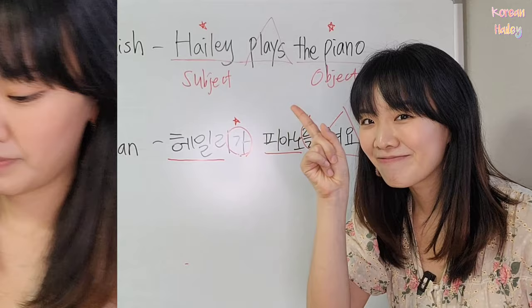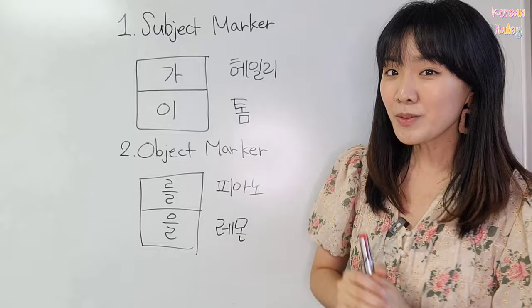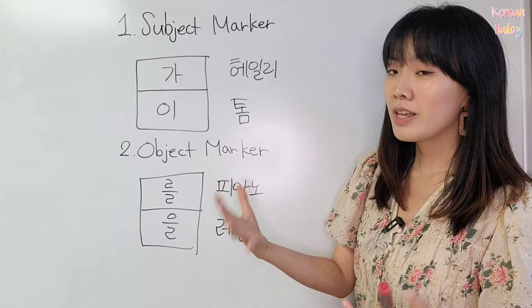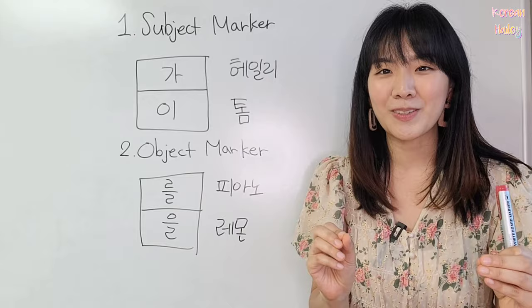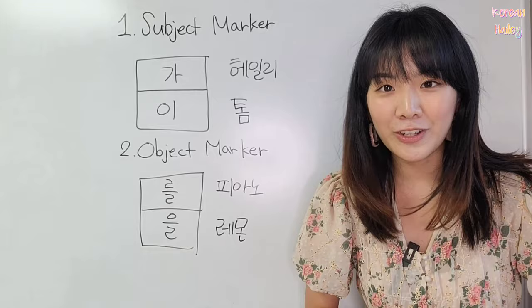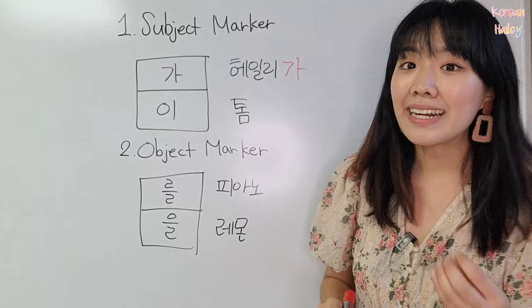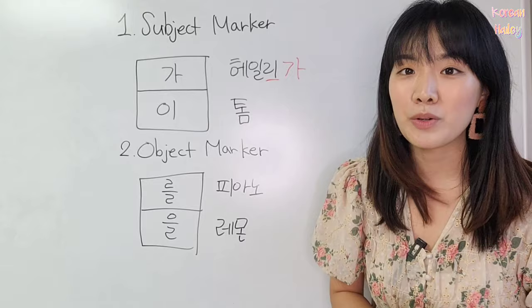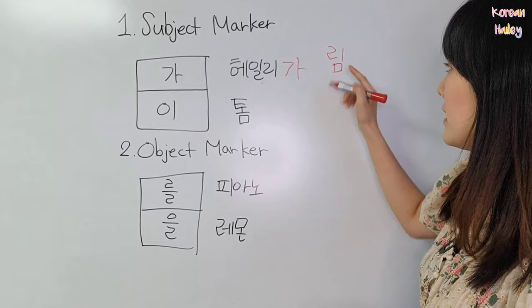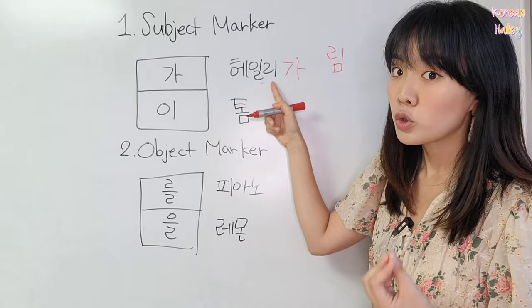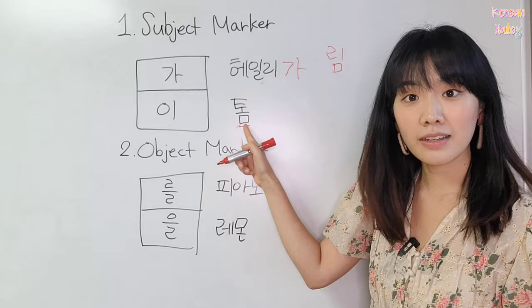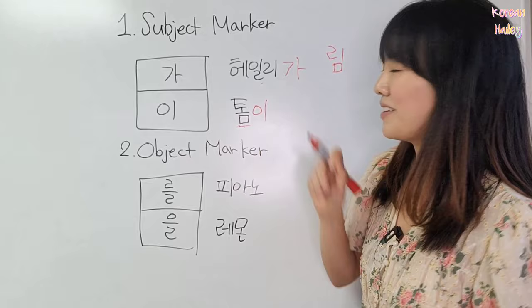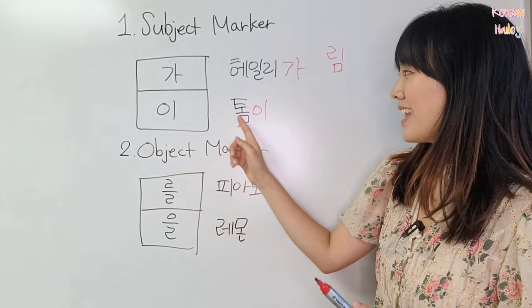I wrote the subject marker examples using 헤이리 and 톰. I want to use 헤이리 as a subject — 헤이리 plays the piano, 헤이리 does something. When the last syllable of 헤이리 has no 받침, you put 가. So it becomes 헤이리가. Now look at 톰 — there is 받침, a final consonant. In that case, you put 이. So 톰이. With no 받침 use 가; with 받침 use 이. They become the subject.